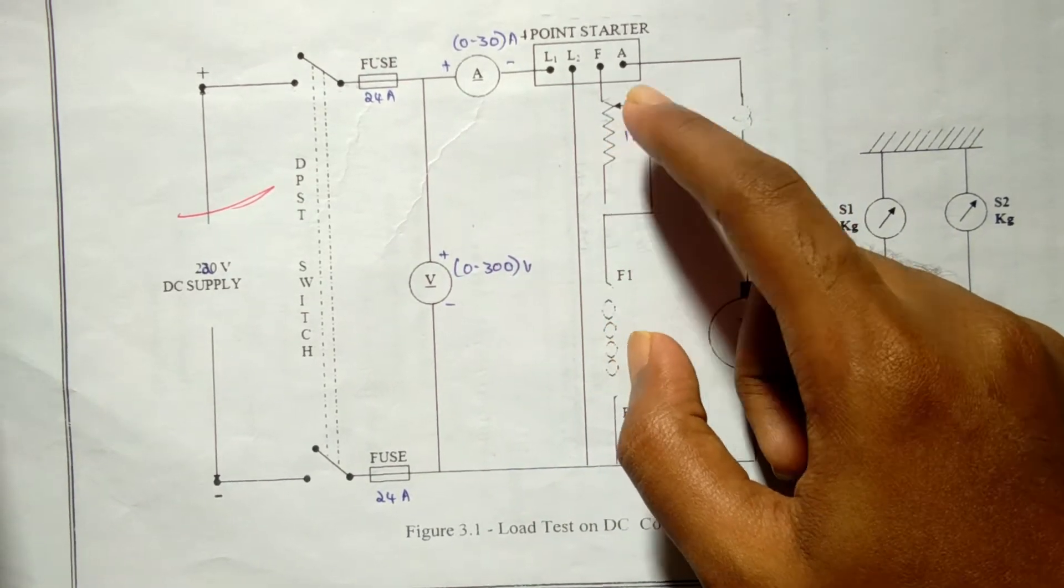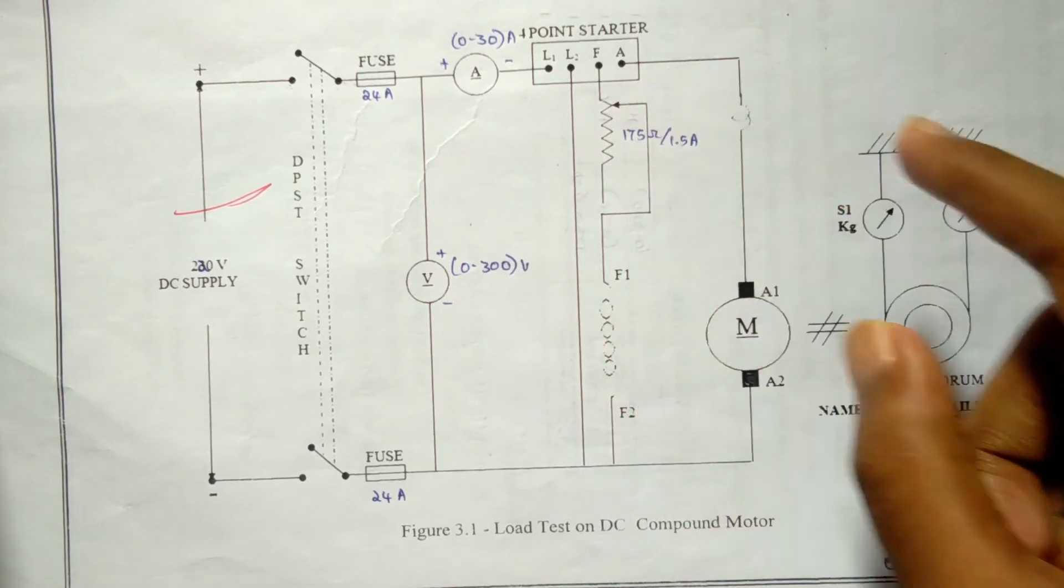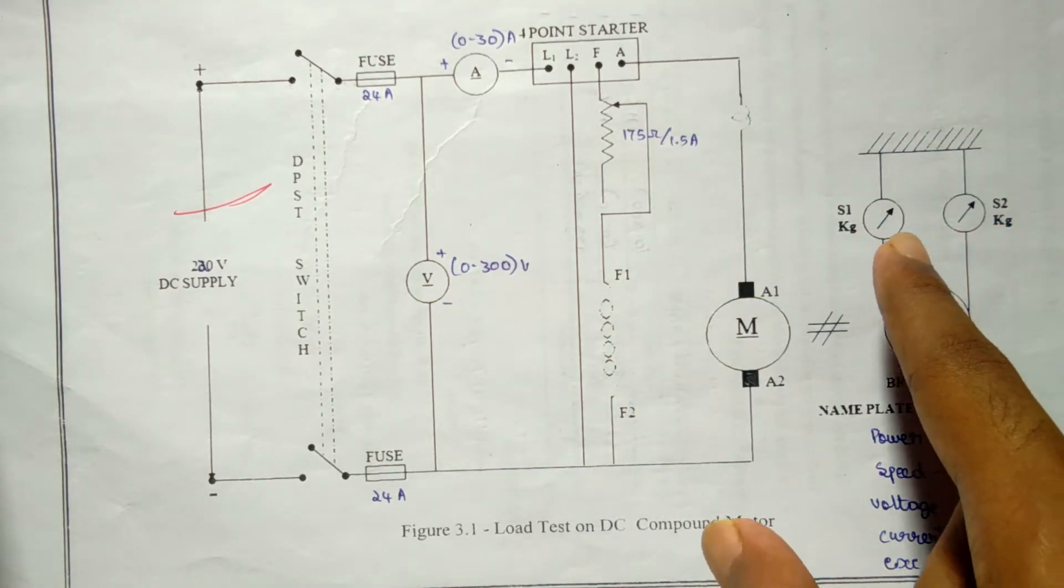The motor field rheostat should be kept at minimum resistance position at the time of starting. Heat produced due to the friction between belt and brake drum is reduced by pouring water inside the brake drum periodically.